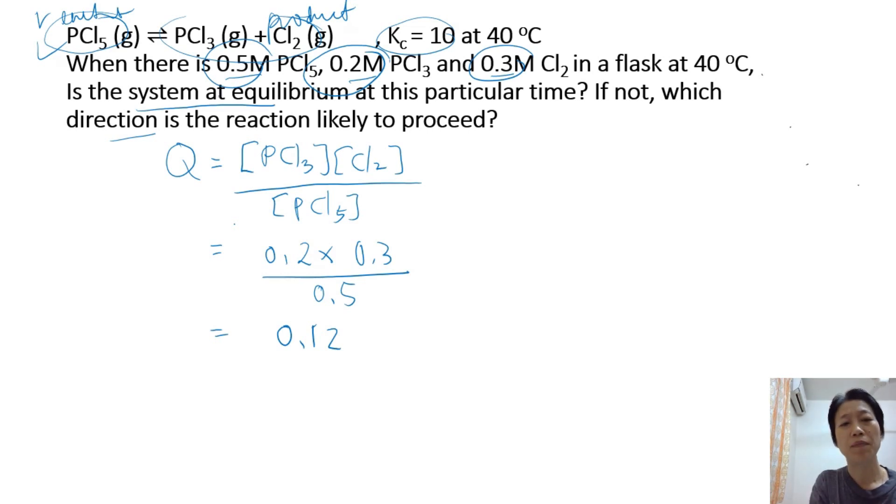We need to put in the concentration. So PCl3 concentration is given as 0.2, Cl2 concentration is given as 0.3, and PCl5 concentration is 0.5. We calculate the answer is 0.12. So is the system at equilibrium? We look at the Q and the K value. Are they the same? Q is smaller than K. Q is 0.12, K is 10, so Q is not equal to K. So the system is not at equilibrium.